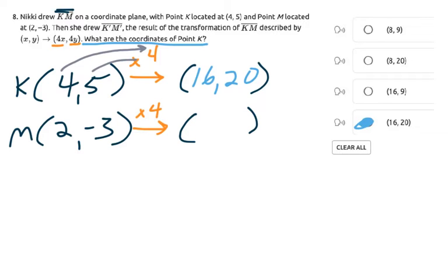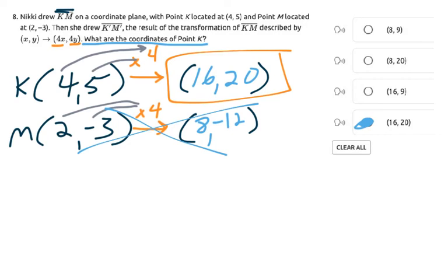If you continued, you'd do the same thing here. If they wanted M, you'd say 2 times 4 is 8, and negative 3 times 4 is negative 12. But we don't need that. I'll just exit out. That's the answer. We're just multiplying by 4.